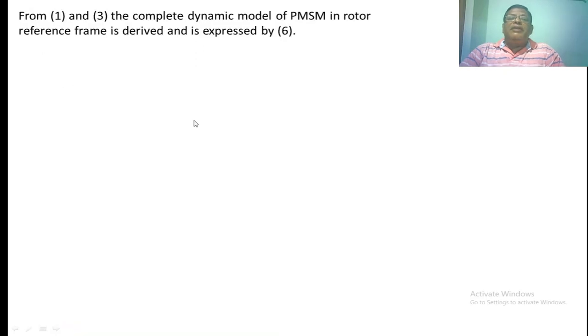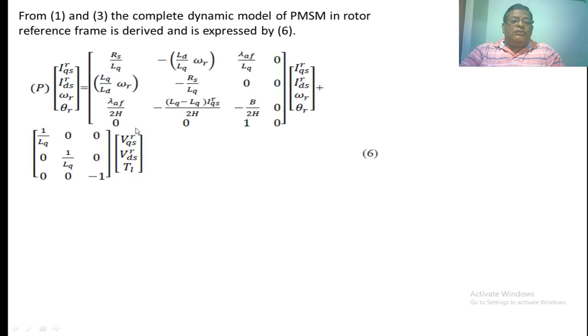The complete dynamic modeling of PMSM motor on rotor reference frame where P is the derivative. This is the state space equation of permanent magnet synchronous motor. The derivative of the current vector, speed vector, and angular position of rotor equals IQS IDS omega R theta R multiplied with a matrix plus voltage vector and load torque multiplied with this matrix.